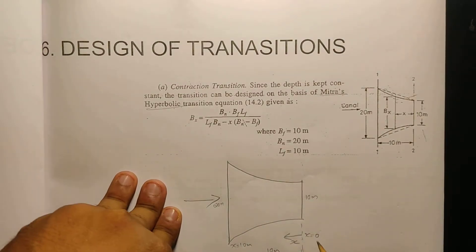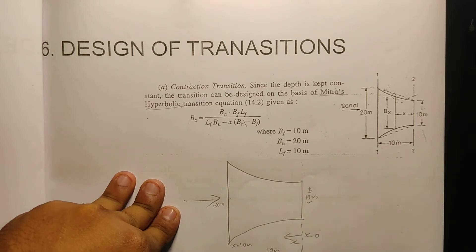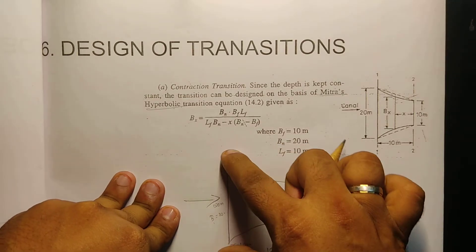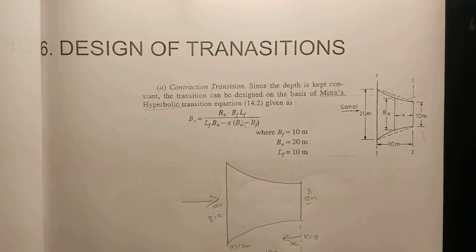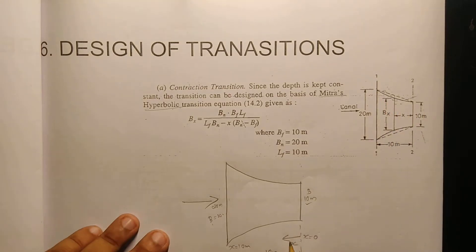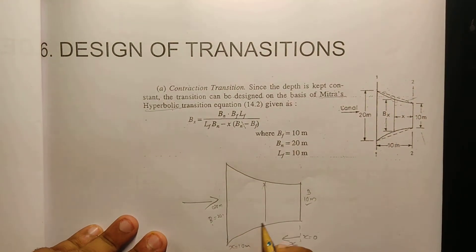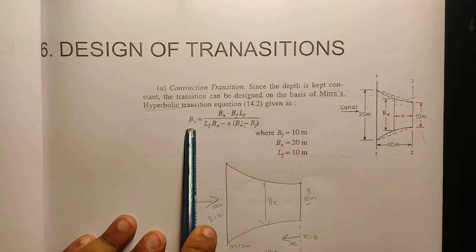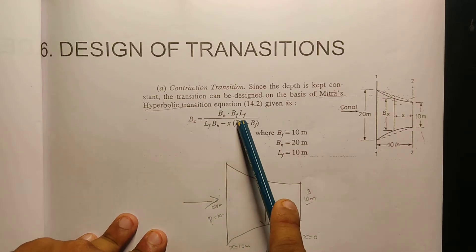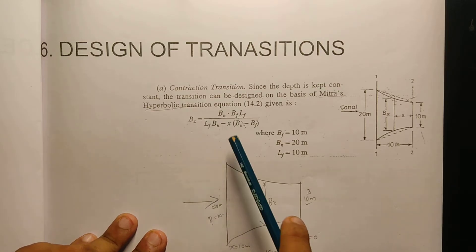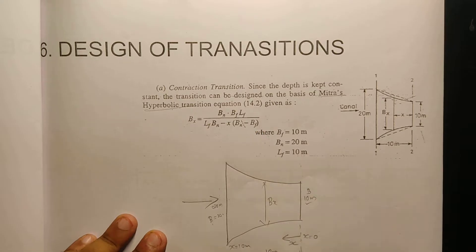At x equal to 0, B is equal to 10 meters. At x equal to 0, B is equal to 20 meters — here it is 20 meters, and here it is 10 meters. So the equation is: Bx is equal to Bn into Bf into Lf, divided by Lf into Bn minus x into Bn minus Bf.